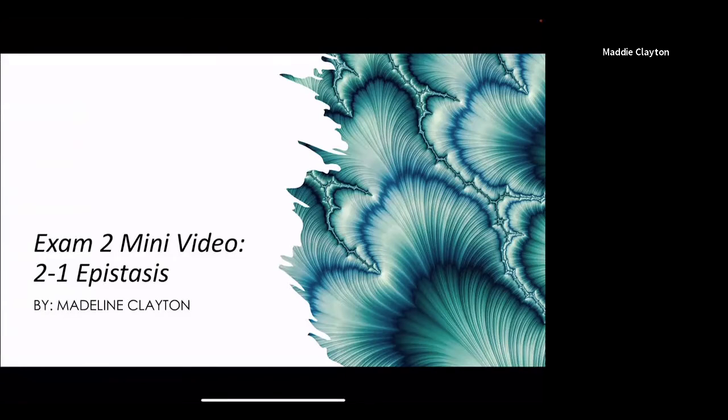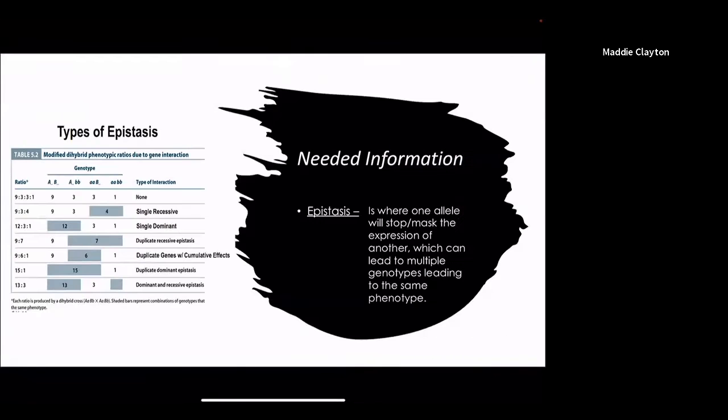Sam 2 mini video and today we're focusing on epistasis. Epistasis is where one allele will actually mask or stop the expression of another and this leads to multiple genotypes showing the same phenotype.